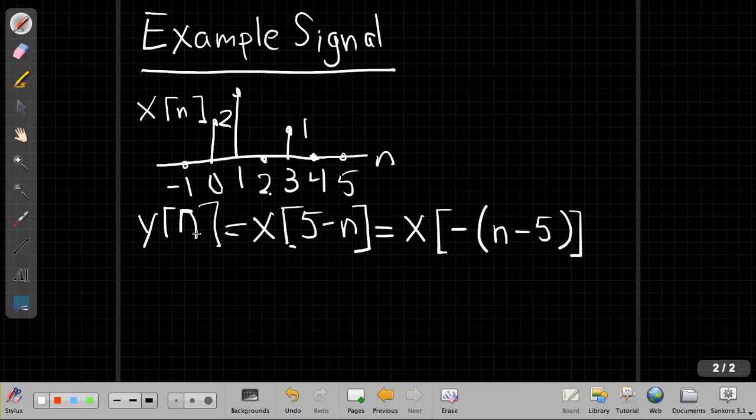The other way, we can just use various values to plug in, and we say, well, if I want to know where this value is going to end up, we say which value of n here will make this argument zero. So when n equals five, I'll have y[5], when n equals five gives me x[0]. All right, so another way to look at that is that y[5] is x[0].